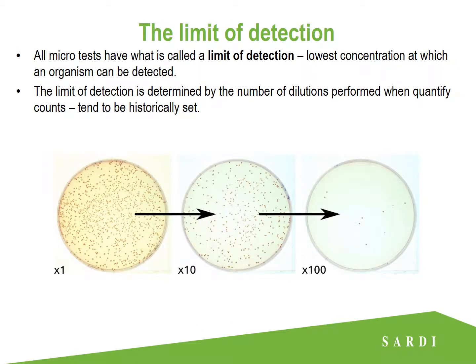The last micro concept I'm going to cover is the limit of detection, which is the lowest concentration at which an organism can be detected. This is dictated by the number of dilutions performed when counting the number of colony forming units — the CFU. Serial dilutions are a practice used commonly by microbiologists so they can get a countable number of colonies on a plate — there's no use counting from a plate that has hundreds or thousands of colonies. Problems can arise with serial dilutions because these dilutions tend to be historically set. When micro performance improves, as it has significantly in Australian red meat processing, sometimes these historical dilutions mean that bacteria is not getting detected at a low enough concentration.